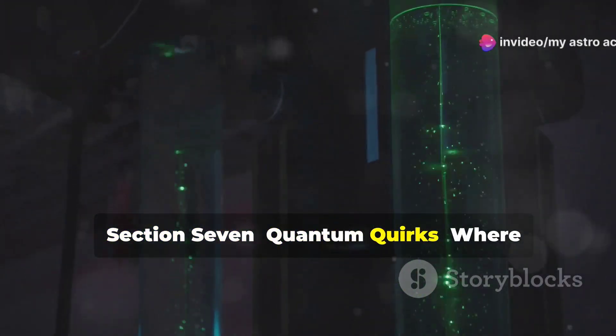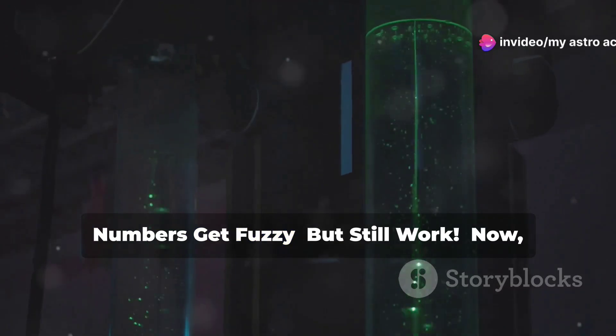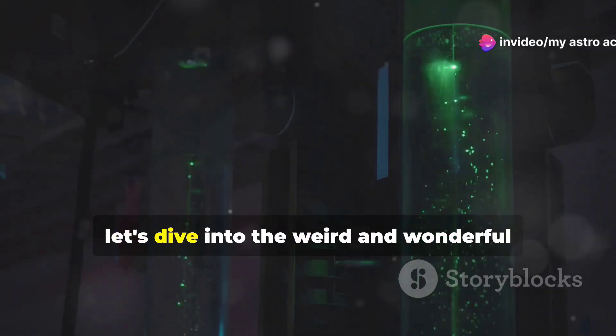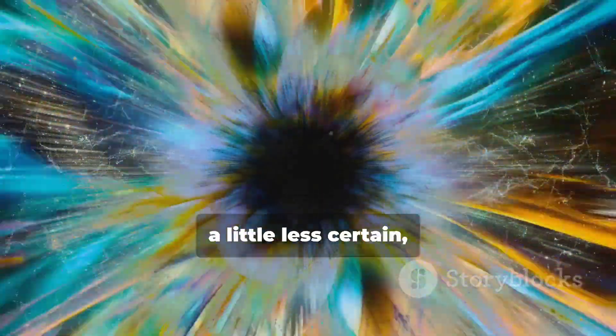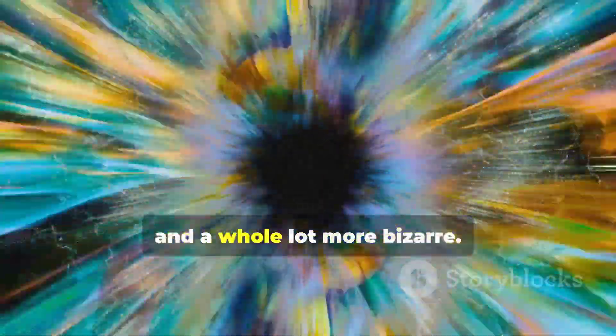Section 7: Quantum Quirks, where numbers get fuzzy but still work. Now let's dive into the weird and wonderful world of quantum mechanics, where things get a little fuzzier, a little less certain, and a whole lot more bizarre.